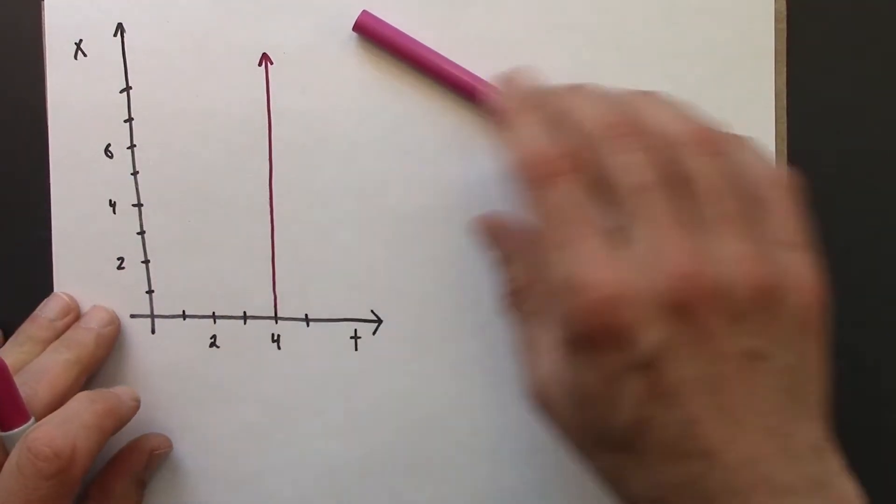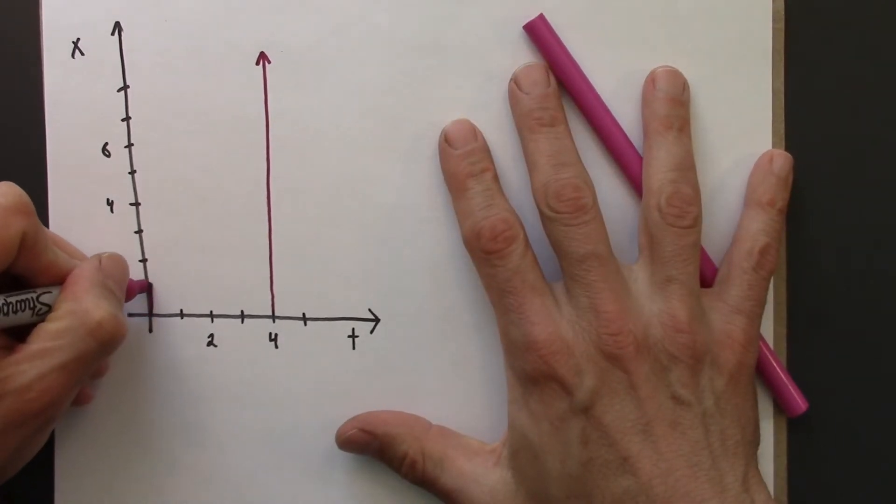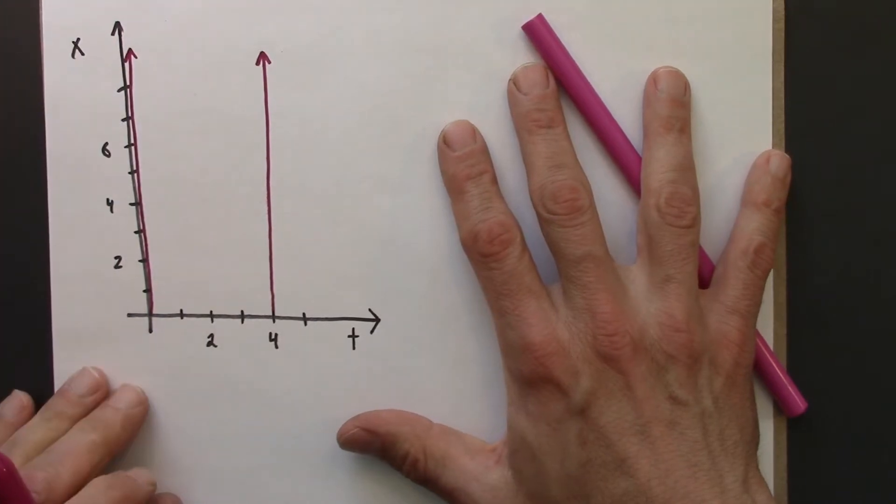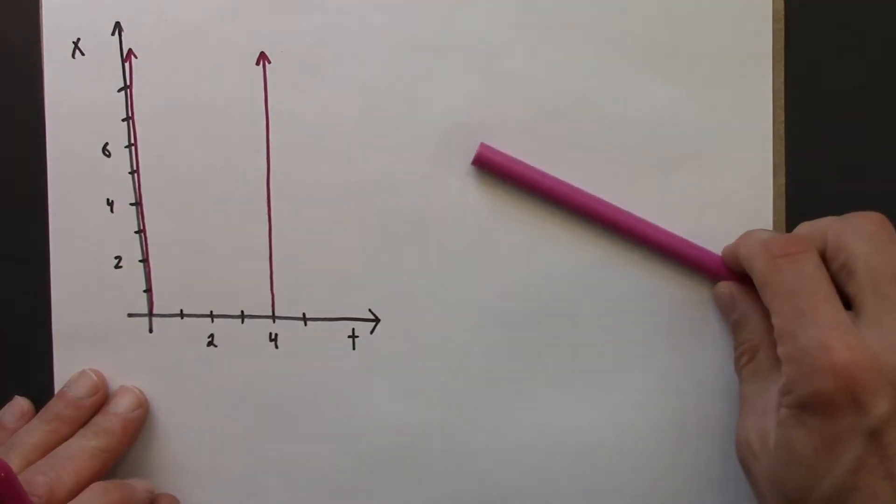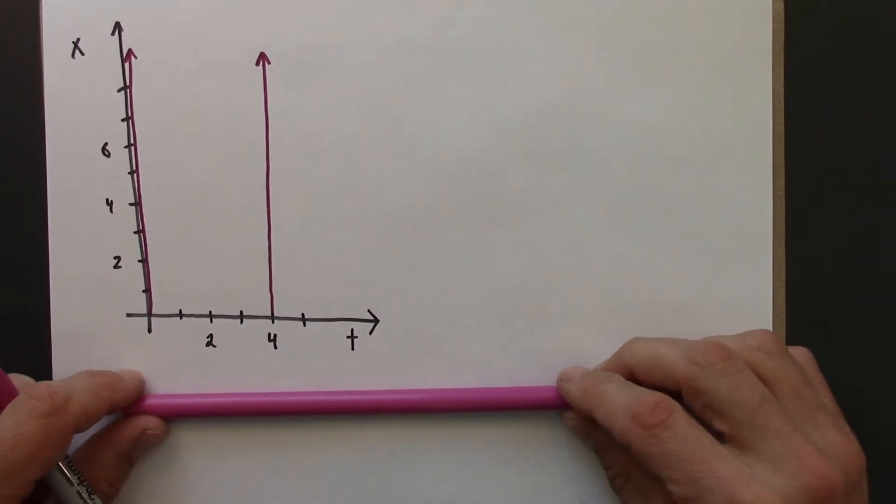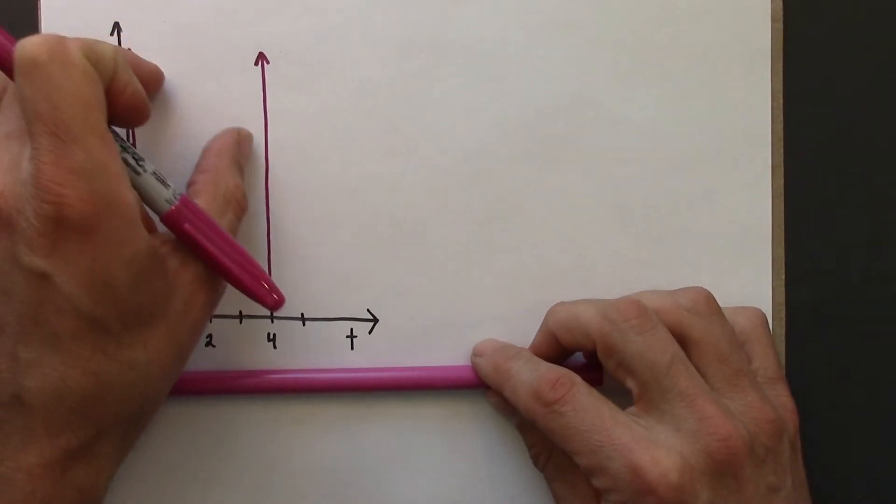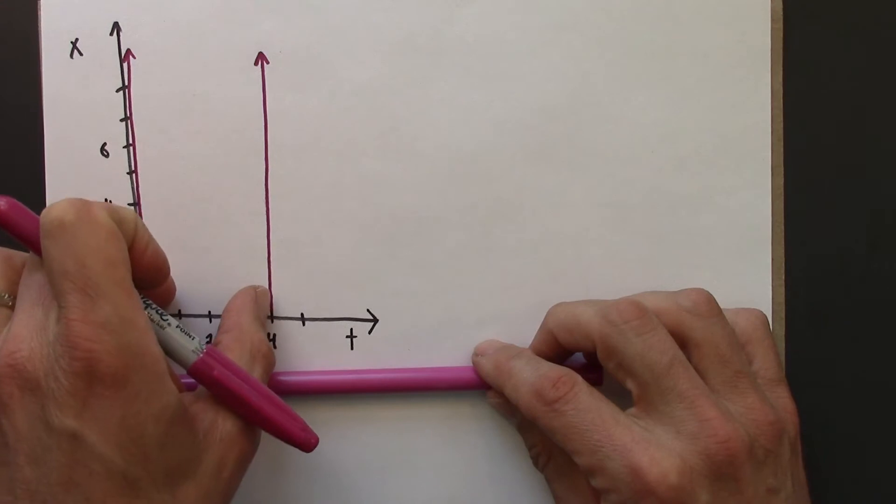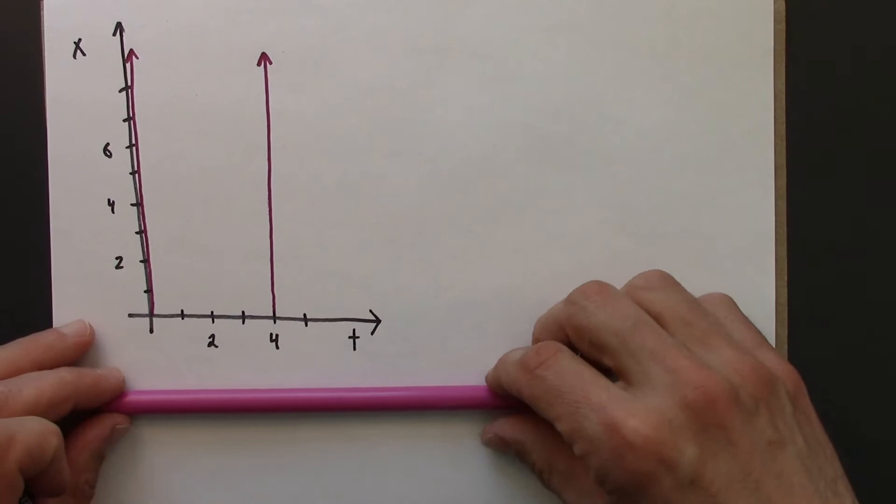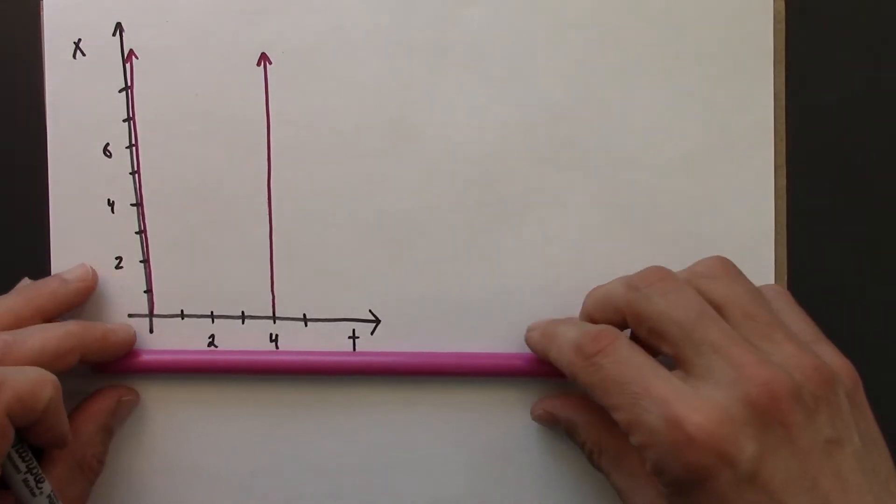So this would be the world line of the right end of the stick. And then the world line of the left end would be right at x equals 0. So this is the space-time diagram for a stick, 4 nanoseconds long, that's just sitting still. And this region in between, we would call the world region for the stick. I'm not going to shade this in, because I think it's going to make the graph a little bit too messy. Alright, so far so good.